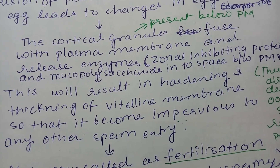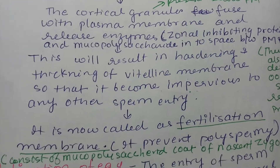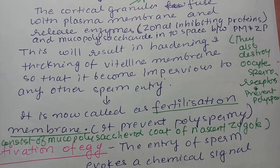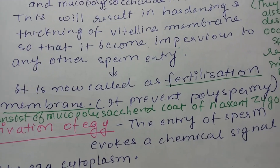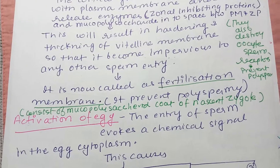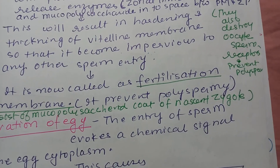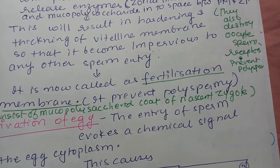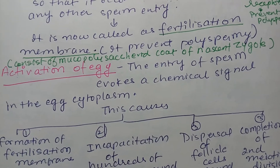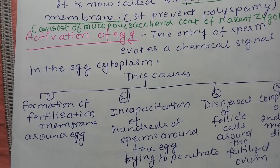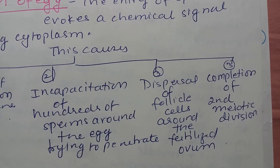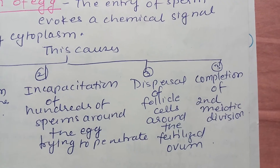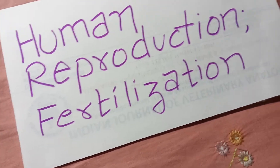The contents released from the cortical granules cause thickening around the vitelline membrane, which is transformed into the fertilization membrane. This prevents polyspermy. The fertilization membrane consists of a mucopolysaccharide coat that coats the nascent zygote. Activation of the egg follows: sperm entry evokes a chemical signal causing formation of the fertilization membrane, incapacitation of hundreds of surrounding sperm, dispersal of follicle cells around the fertilized ovum, and completion of meiosis two.